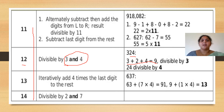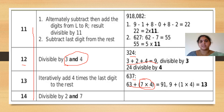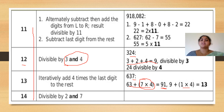For 13, alternatively add 4 times the last digit to the rest. For example, with 637: 63 plus 7 times 4 equals 91; then 9 plus 1 times 4 equals 13, which is a multiple of 13, so the number is divisible by 13. For 14, check whether the given number is divisible by both 2 and 7.